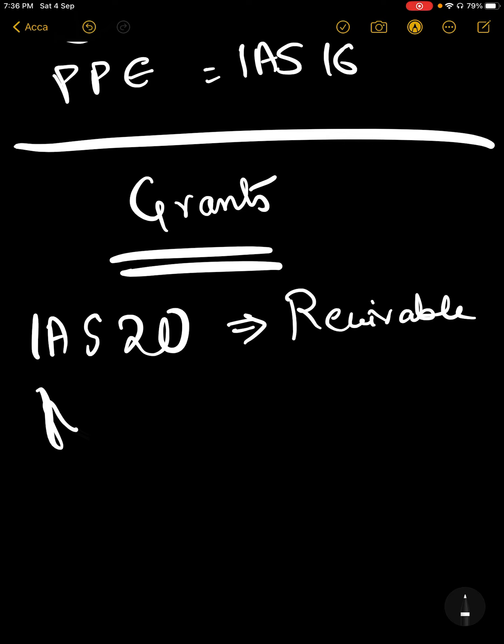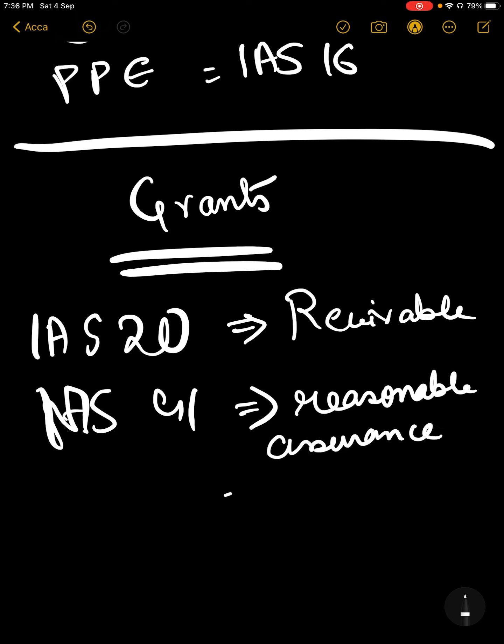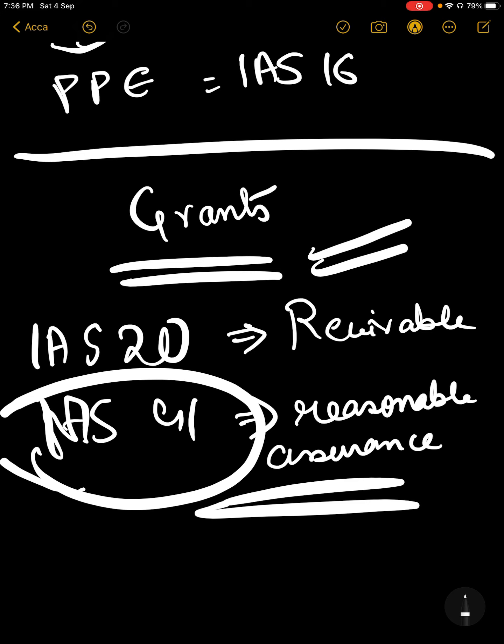But in the case of IAS 41, grants are recognized when there is reasonable assurance of receiving the grant. So IAS 41 gets a major leeway for government grants—this is an important point.